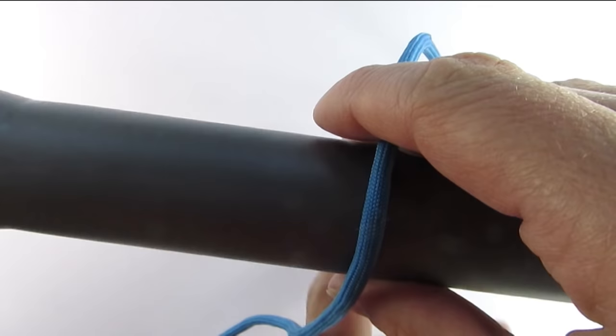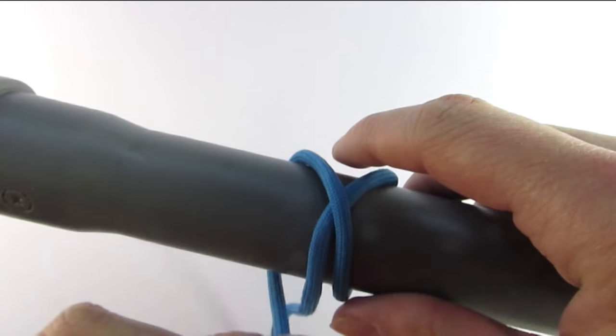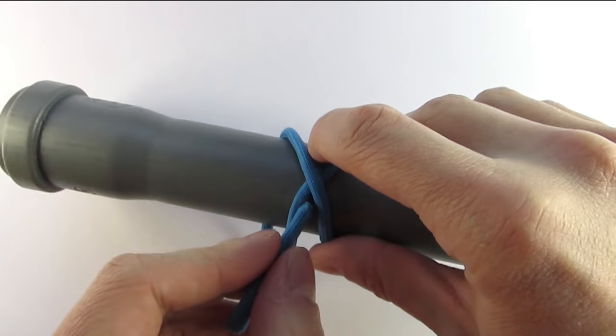To tie this knot, we're going to pass the object we're attaching the cord onto twice in an X shape like this, then take our end and place it under this X shape.